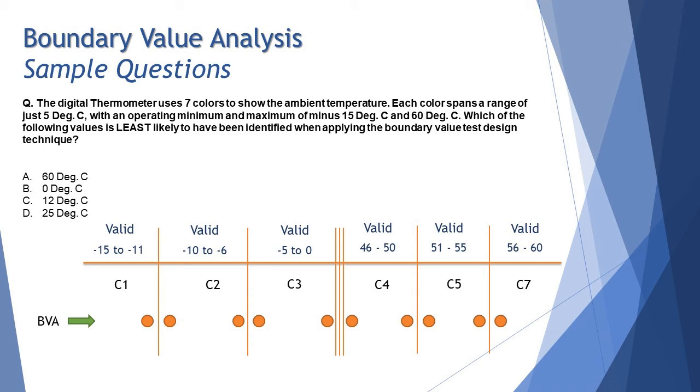Thus 25 also exists as the right answer but the only thing here is we are looking for the least likely option to be identified as boundary value and here we are talking about two-point analysis and they have not specified. The reason is this is an older pattern question and in the previous syllabus we never had something called as two-point or three-point analysis or boundary values. So it's just that simple.